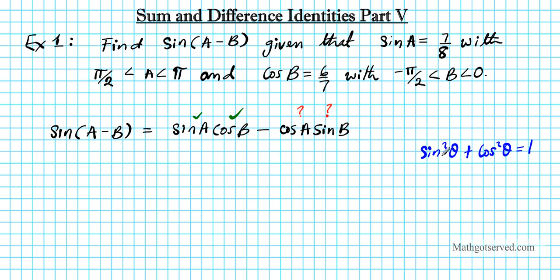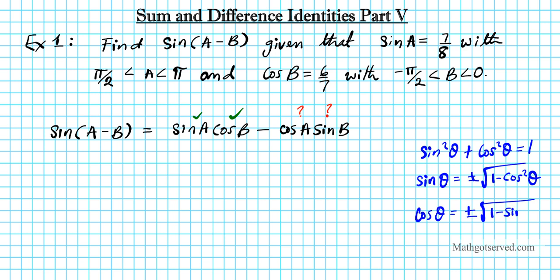From this identity, if I solve for sine I get sine theta equals plus or minus the square root of 1 minus cosine squared theta. Similarly, cosine theta equals plus or minus the square root of 1 minus sine squared theta. So with cosine I can find sine, and with sine I can find cosine.